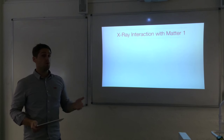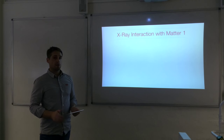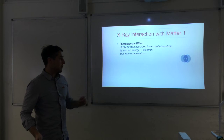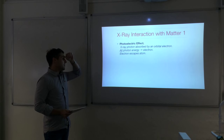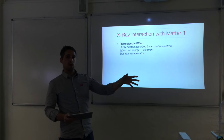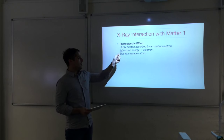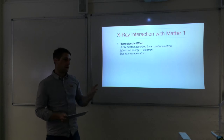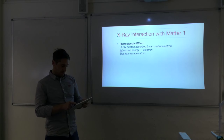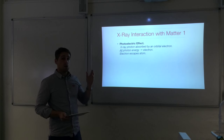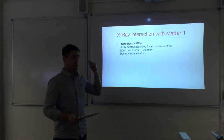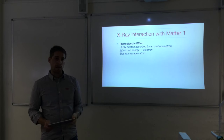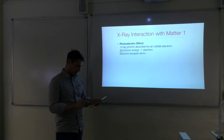X-rays are absorbed by matter and there are three methods you need to understand. The first process is the photoelectric effect. An x-ray photon is absorbed by an orbital electron in the matter that the x-rays are travelling through. All of the photon energy is given to the electron, giving it enough energy to escape the atom. This is similar to the photoelectric effect from Unit 2, but here the x-ray photons have much higher energy so they can actually ionise atoms, leaving behind positive ions.